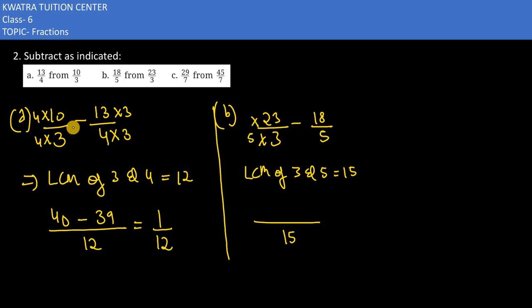Multiply the first number: 23 into 5 gives 115. Then multiply the next number, which gives 54. Now subtract: 115 minus 54 equals 61. So 61 over 15 is the answer for part B.